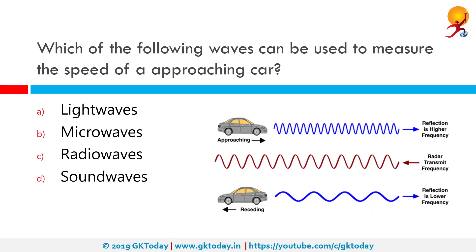Which of the following waves can be used to measure the speed of an approaching car? The correct answer is radio waves. The frequency difference between the signals gives the true speed of the target vehicle.